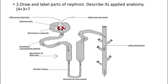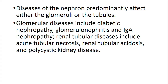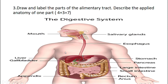You can refer to the anatomy textbook for more features of a nephron. Applied anatomy: diseases of the nephron predominantly affect either glomerular or tubules. Glomerular diseases include diabetic nephropathy, glomerulonephritis, and IgA nephropathy. Renal tubular diseases include acute tubular necrosis, renal tubular acidosis, and polycystic kidney disease.